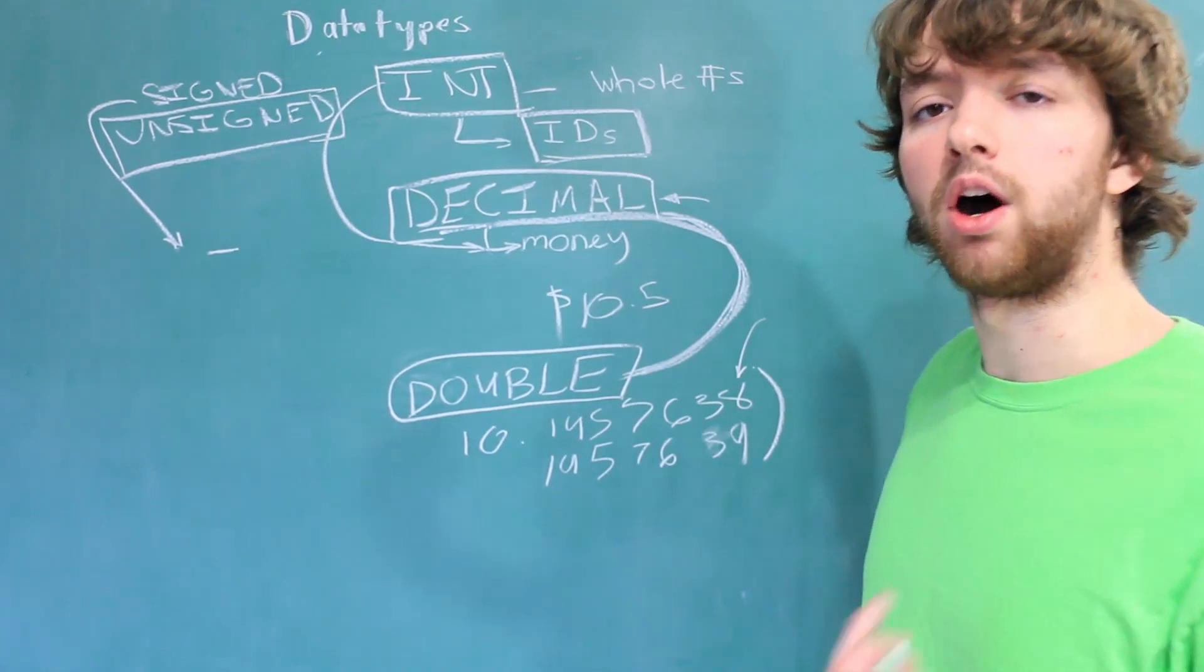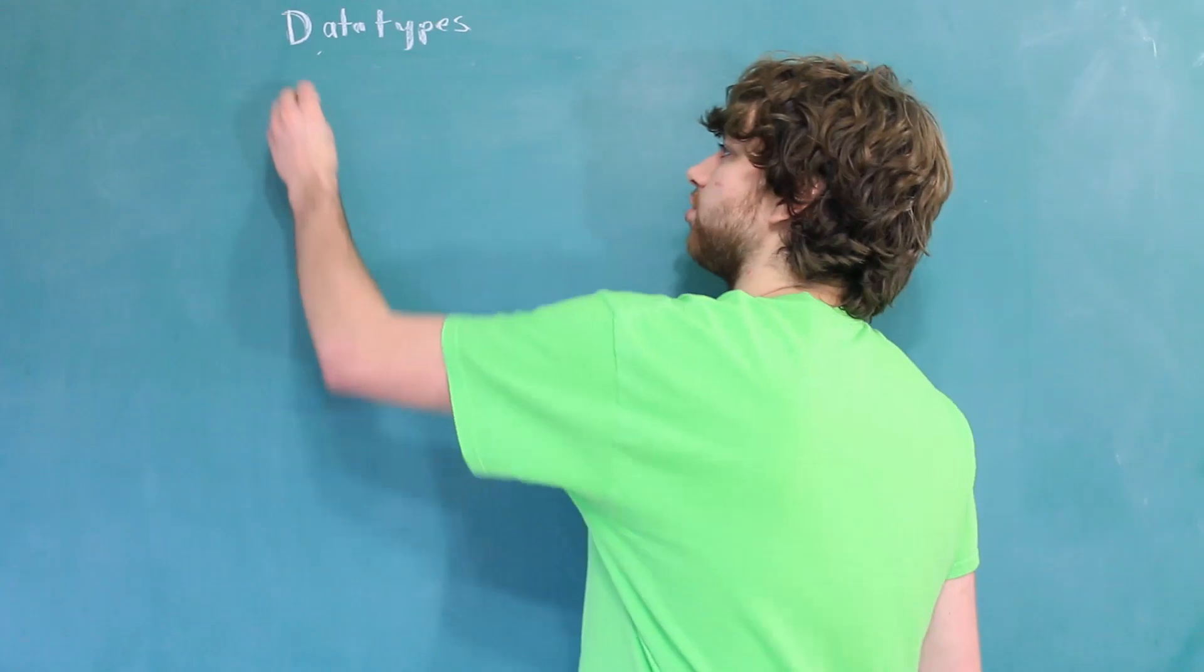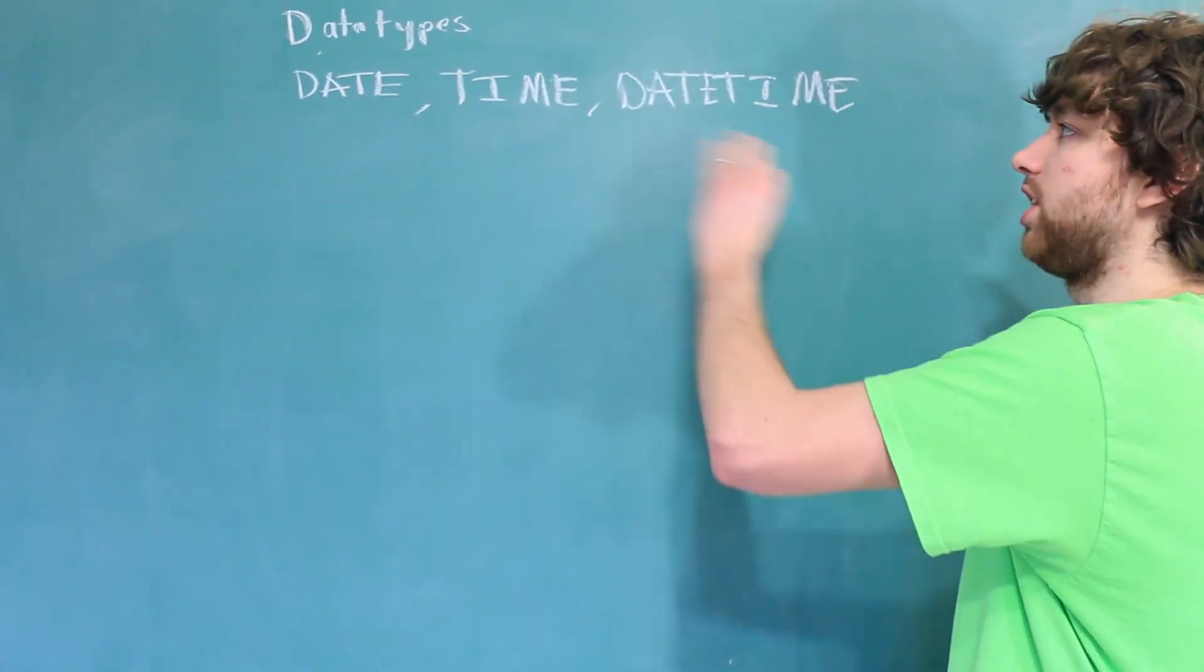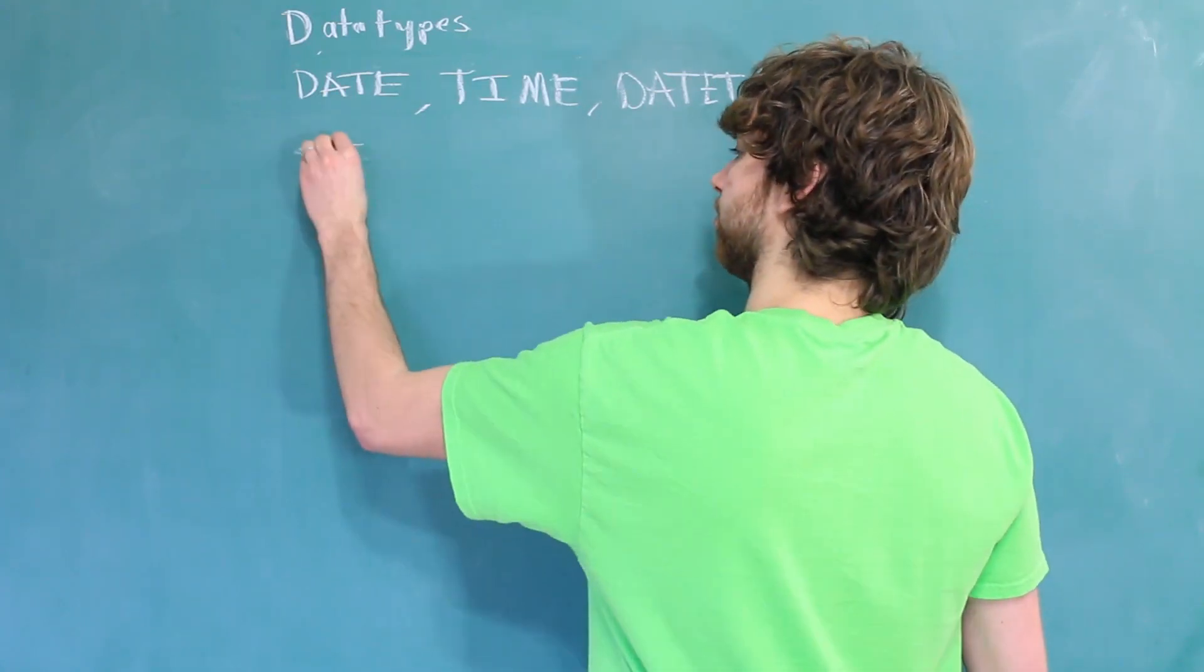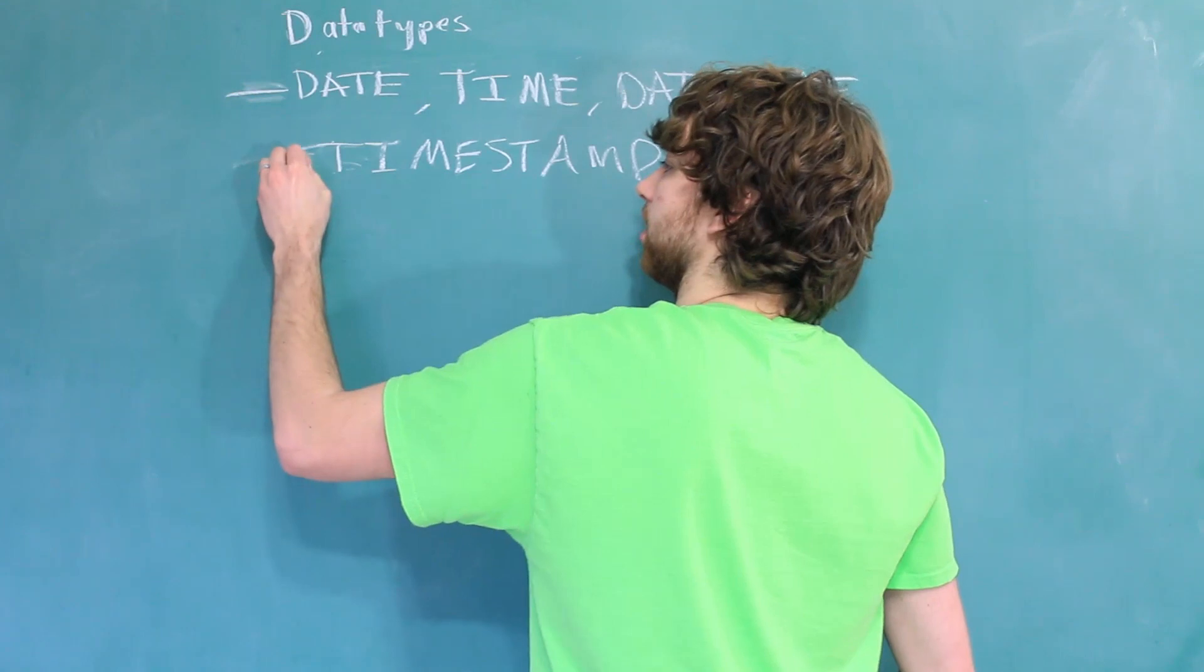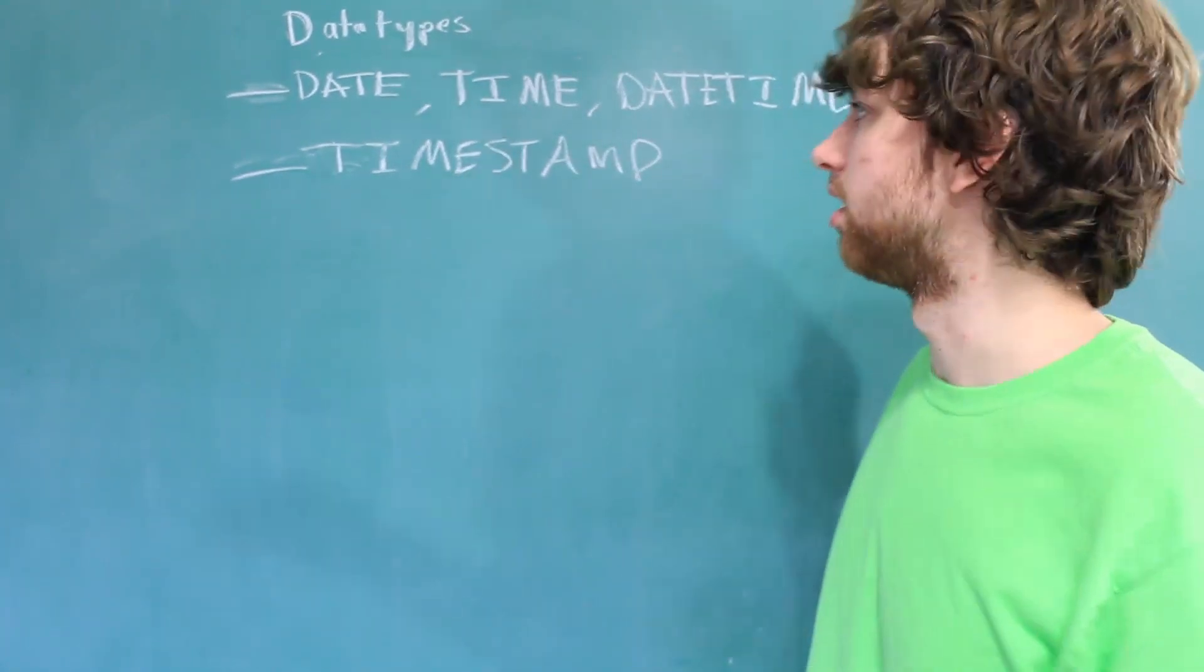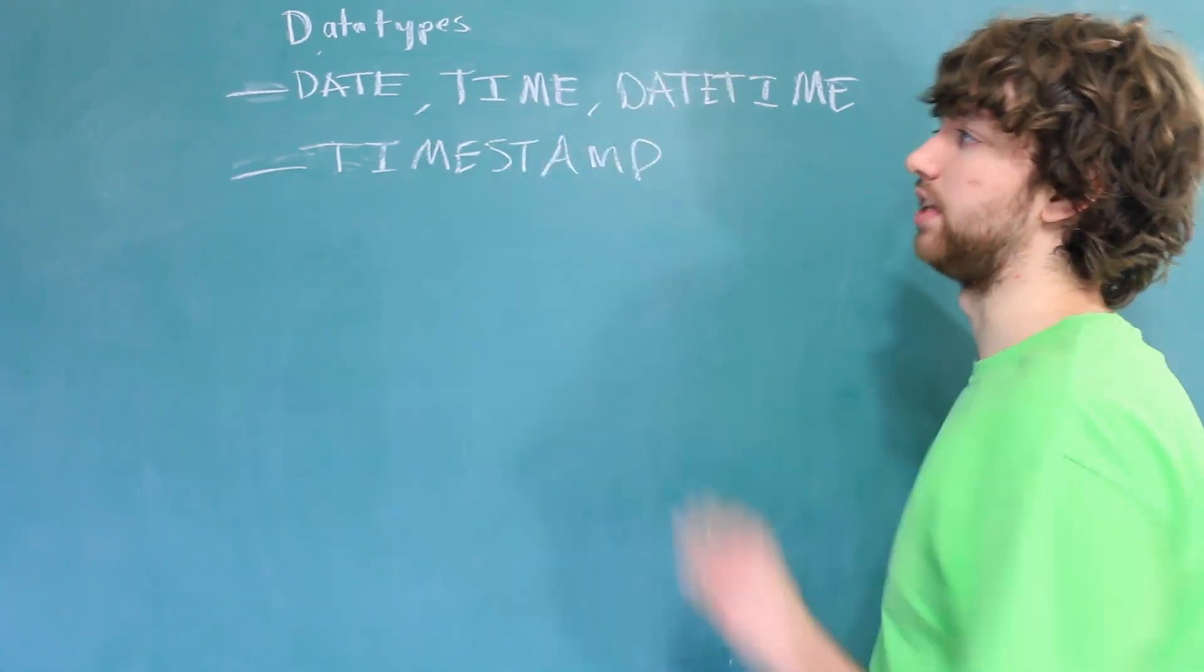In addition to numeric data, we will often want to store dates. So that's what we are going to talk about now. The first three data types I'm going to teach you are DATE, TIME, and DATETIME. And it's pretty obvious what each one of these can store. You can use each one of these to store a specific moment in time. There is also another data type known as a timestamp. And there are some differences between these three data types and this one, but they can both be used to store some instance in time. So we will discuss the differences in the upcoming videos. But for now, know that if you need to store a date or a time, you can use one of these four data types.